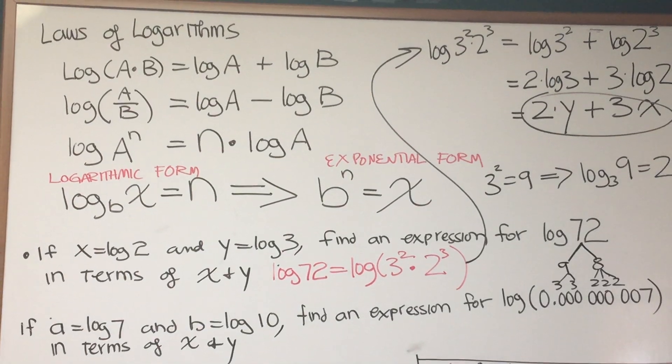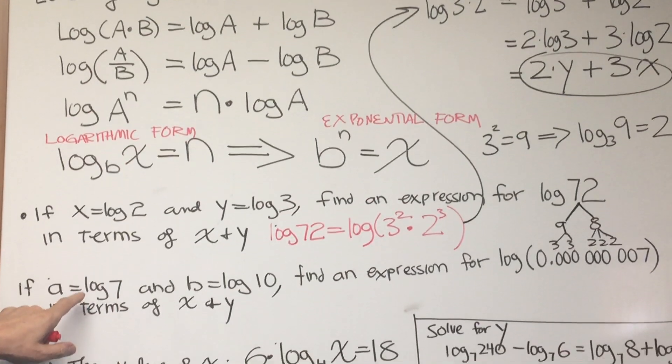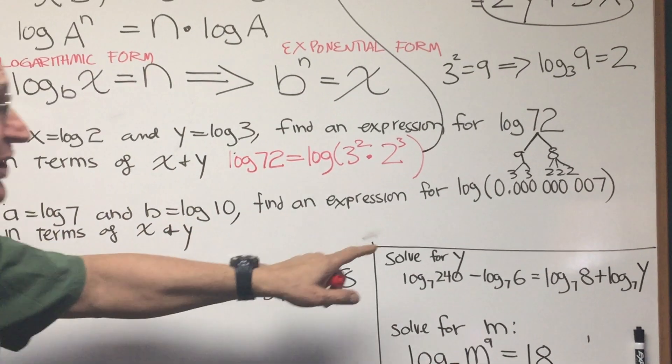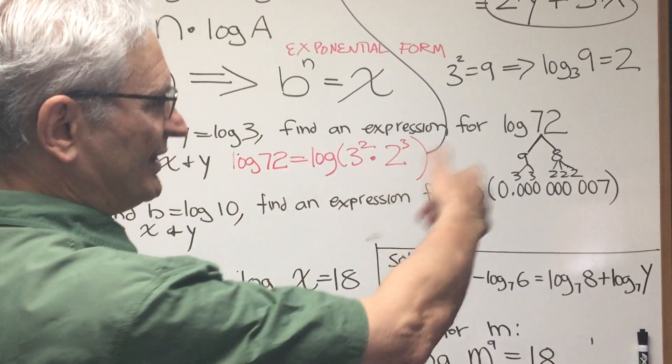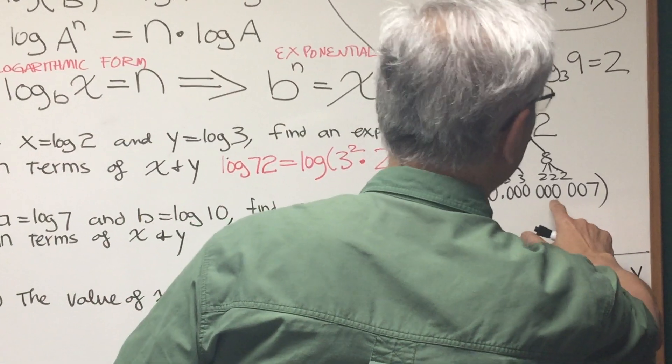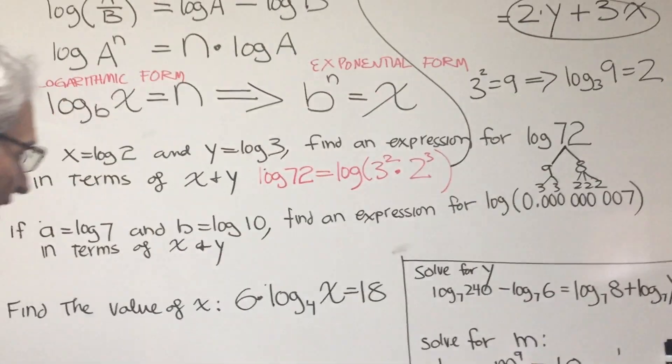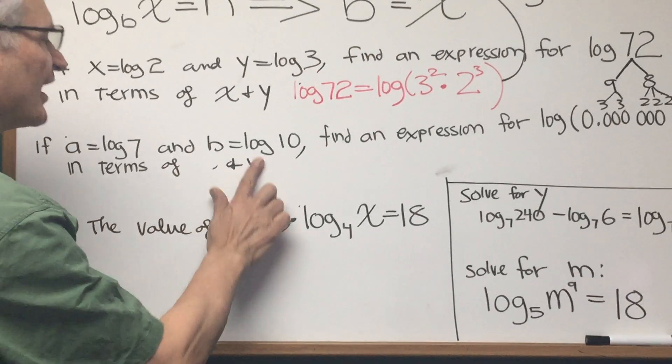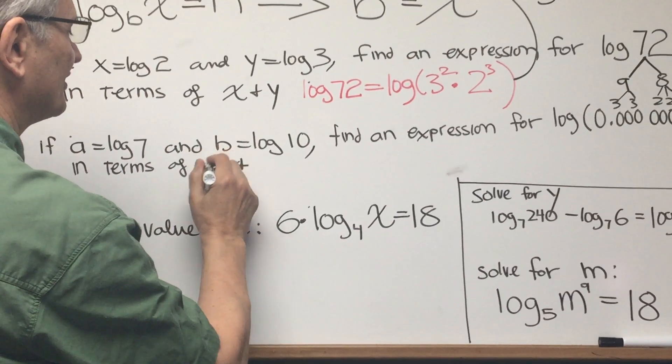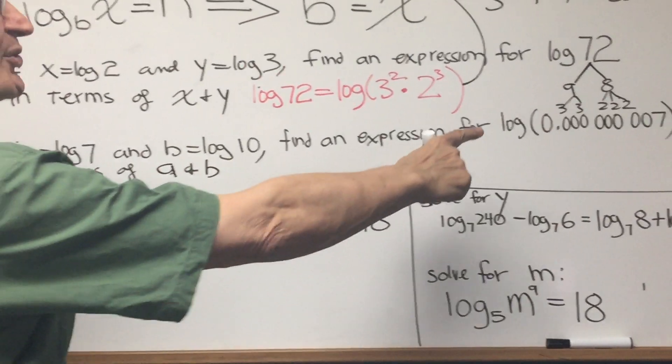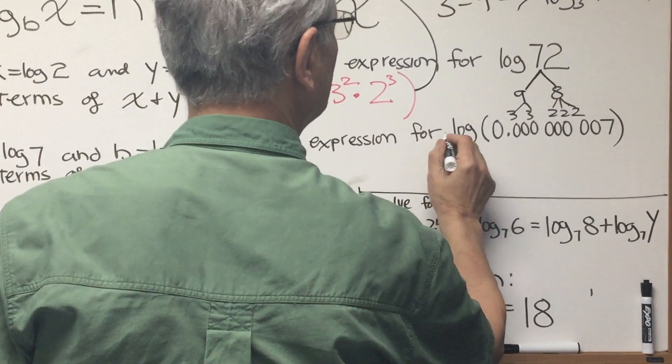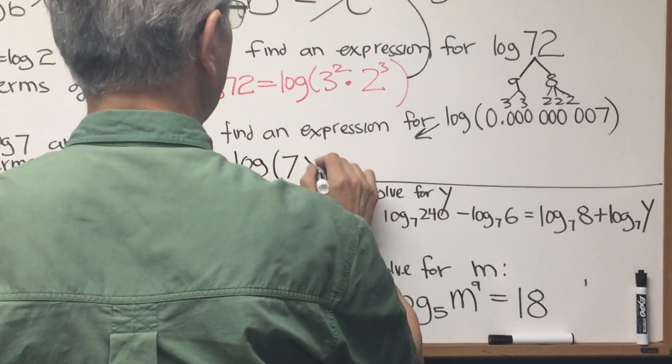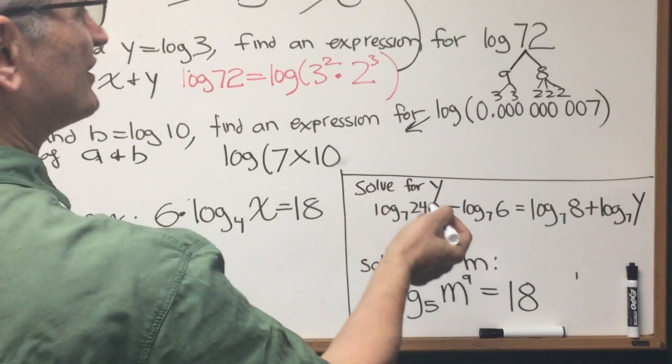Now let's go on to this next one. This is similar to the original problem. a equals log 7 and b equals log 10. Find an expression for this: 0.000000007 in terms of a and b. Let's write this expression in scientific notation. This is log of 7 times 10 to the, let's see, how many decimal places are we moving? 3, 6, 9. So it's 7 times 10 to the minus 9.